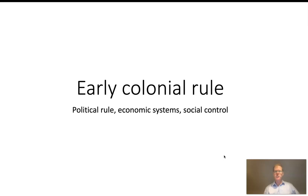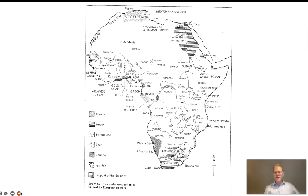We are going to start talking about European colonial rule in Africa — how the system was established and what it was intended to do. By about 1880 we're looking at a continent mostly controlled and ruled over by Africans.